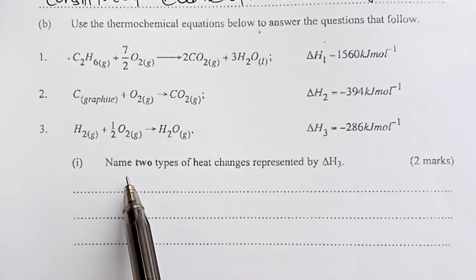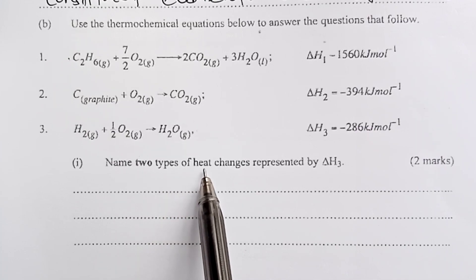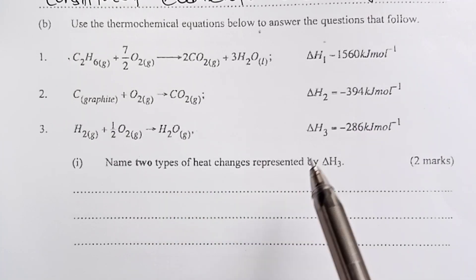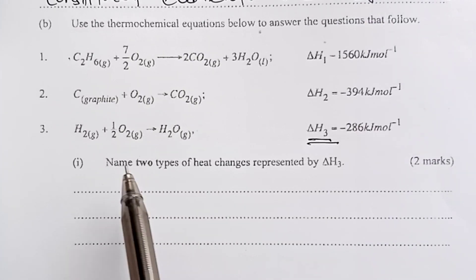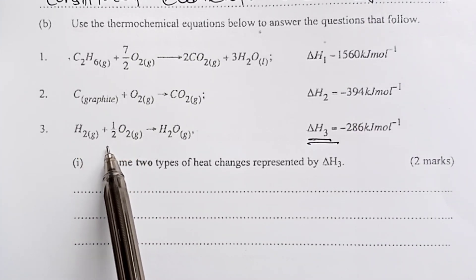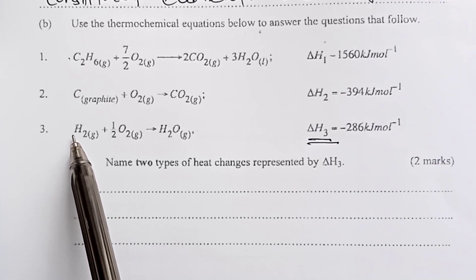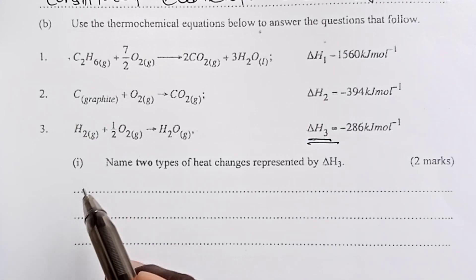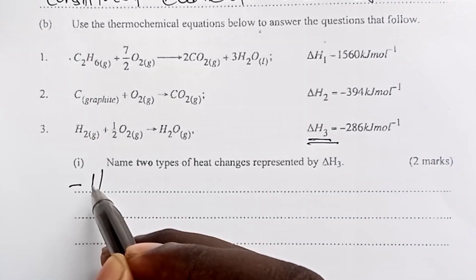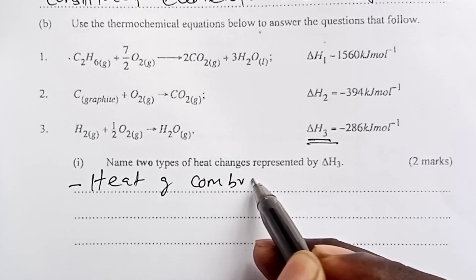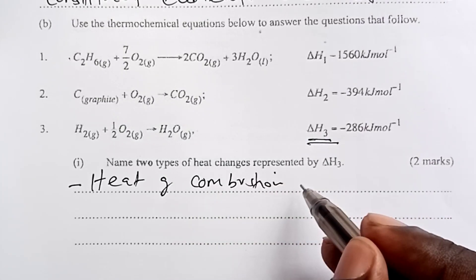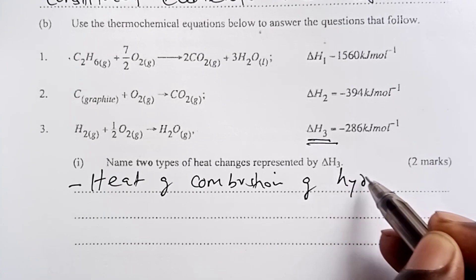Let's look at the questions asked based on the three thermochemical equations. The first question: name two types of heat changes represented by delta H3. So if you look at the equation, firstly, we are burning one mole of hydrogen. For that matter, the first name can be heat of combustion or enthalpy of combustion of hydrogen.